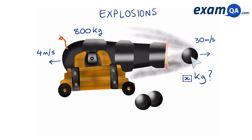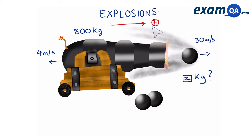With every momentum question we're going to first set our direction. We're going to say anything that moves to the right has positive velocity. Meaning the ball is going to have a velocity of plus 30 meters per second, and the cannon's recoil is going to be minus 4 meters per second since it's going to the left.